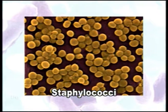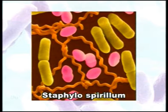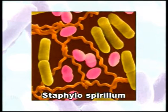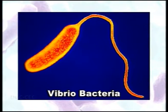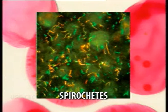Staphylococci are irregular grape-like clusters where the number of spheres is not specific, as seen in Staphylococcus aureus. Another principal shape is the vibrio or spiral type, which may either be curved rods as seen in Vibrio cholerae, or corkscrew-shaped as in spirochetes.